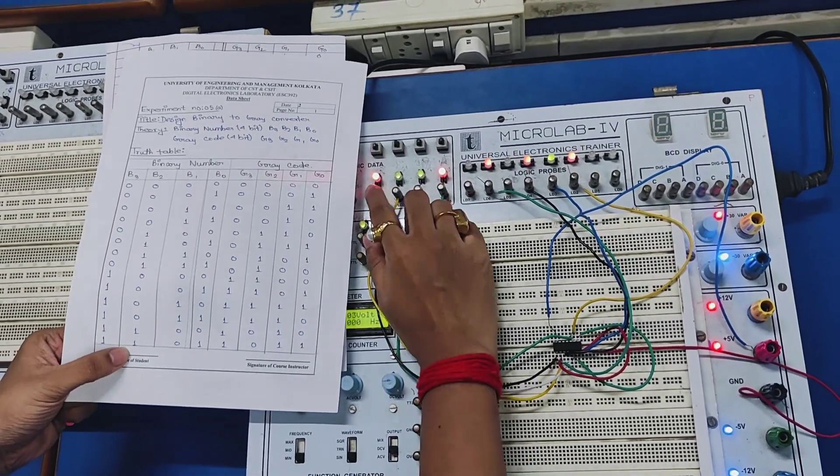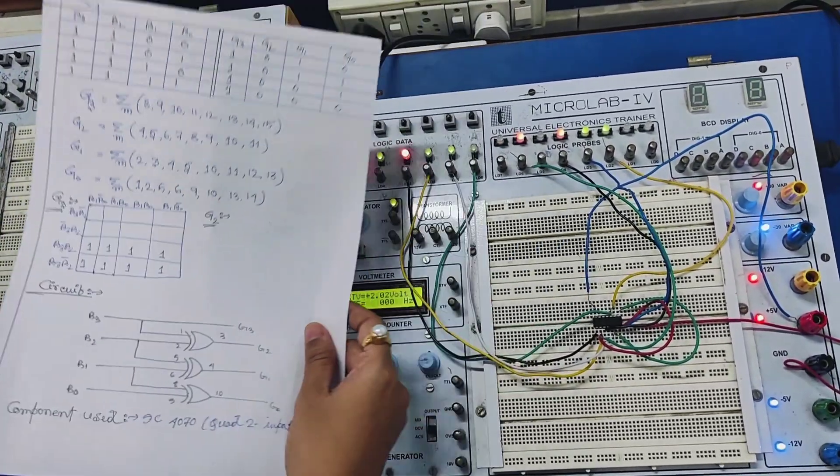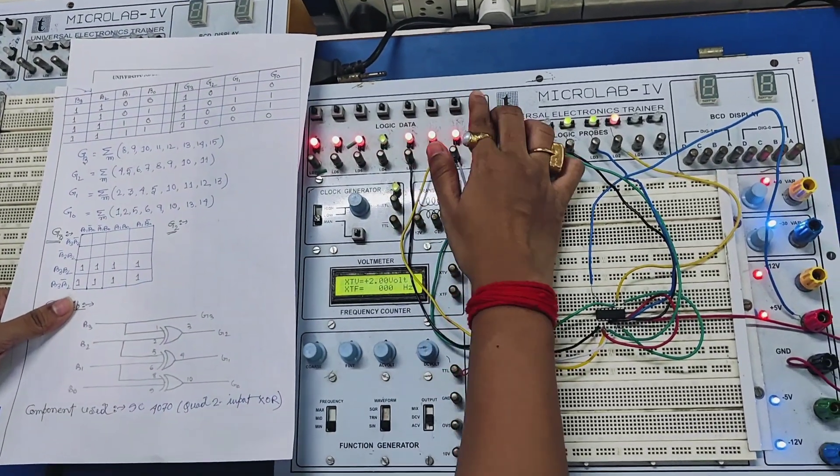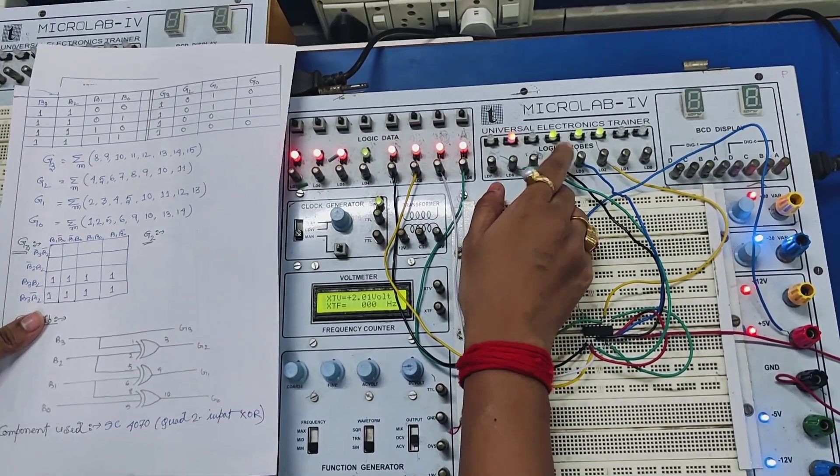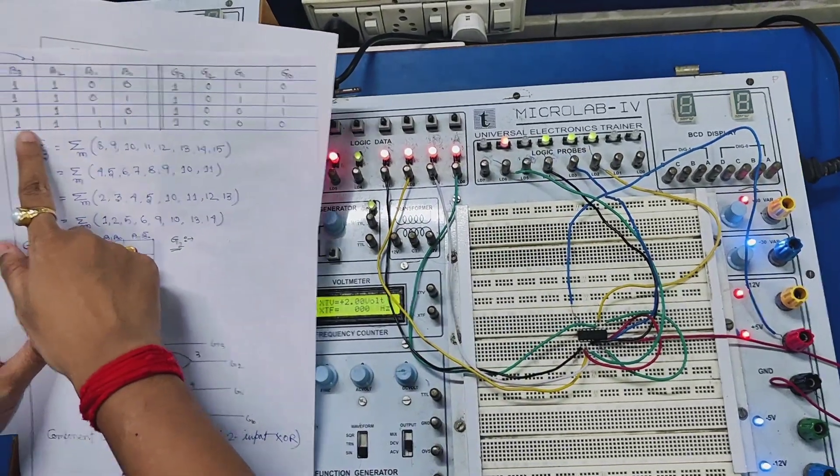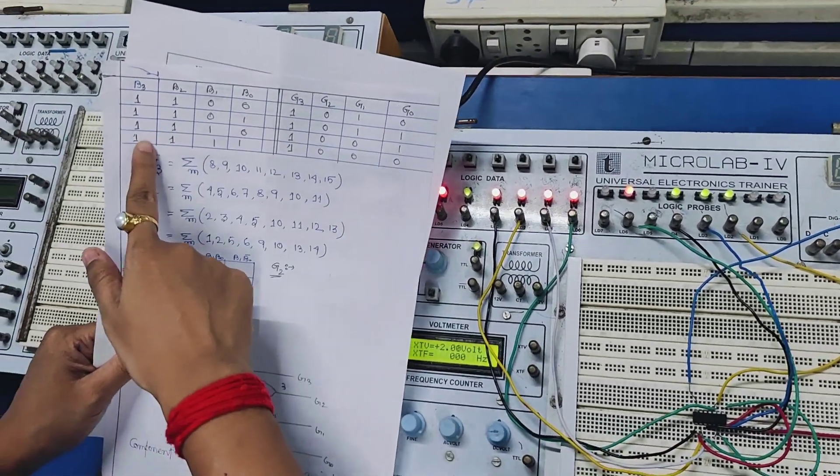Now we are putting the decimal number 15 in the binary which is 1111. From the Gray code we got 1000. Now see here is the binary and the Gray code.